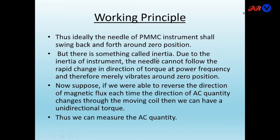However, due to inertia of the instrument, the needle cannot follow the rapid change in direction of torque at power frequency, and therefore merely vibrates around the zero position. If we were able to reverse the direction of magnetic flux each time the AC current direction changes through the moving coil, we can obtain a unidirectional torque and thus measure AC quantities. This is the advantage of electrodynamometer instruments.